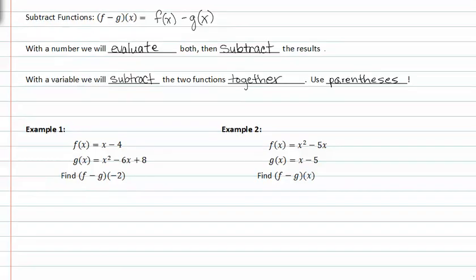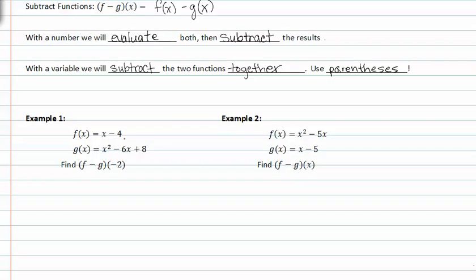Let's look at example one. In example one, we want to find f minus g of negative two. Since we're evaluating given a number, we can write f minus g of negative two as f of negative two minus g of negative two. So let's find f of negative two and then g of negative two.